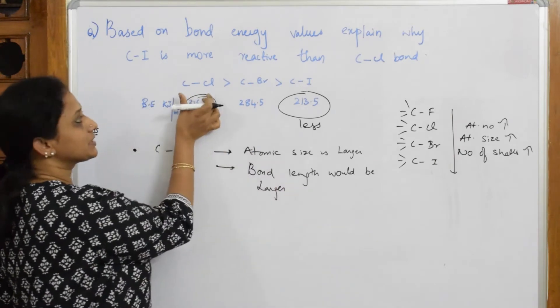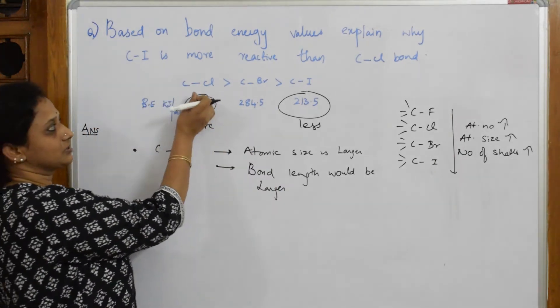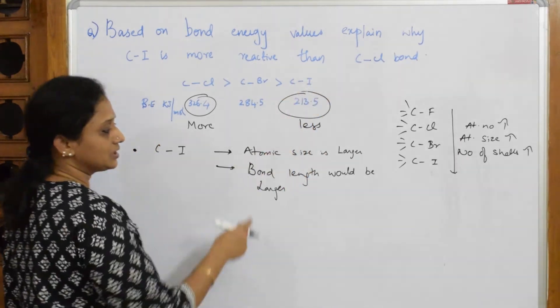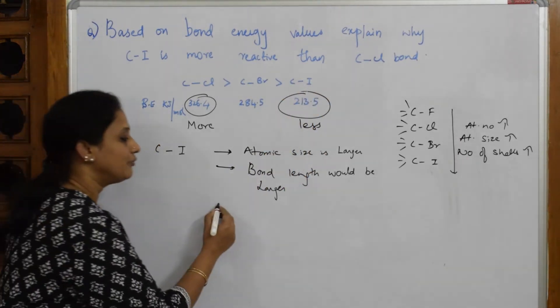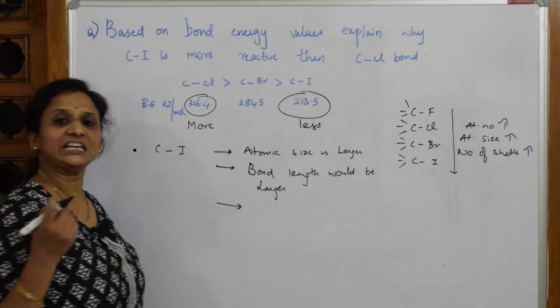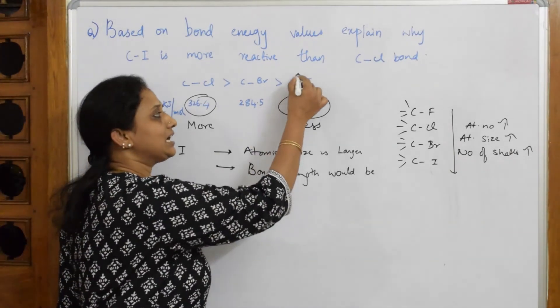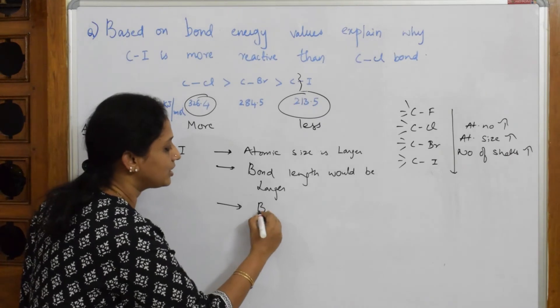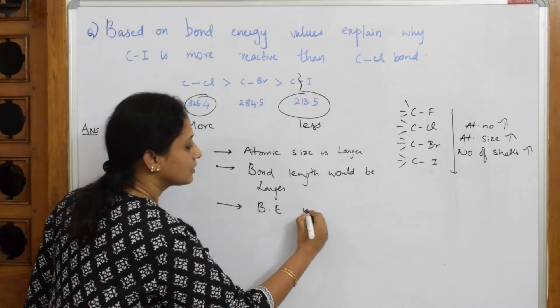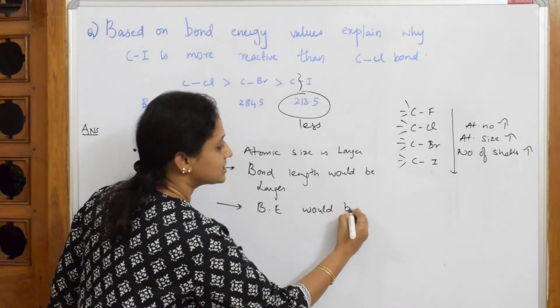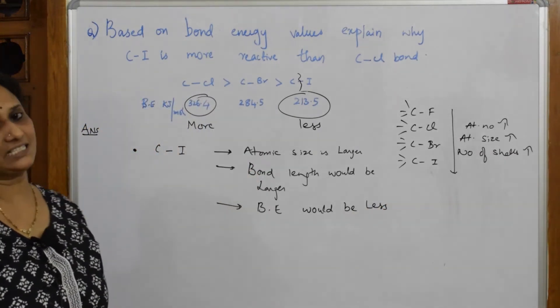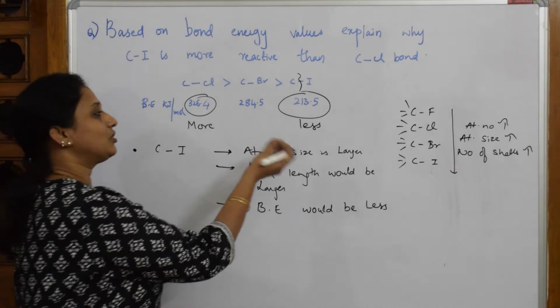Compared to this, because this is highly electronegative, this is going to attract, this is also highly electronegative, but the size of the atom is larger. So bond length would be larger. When the bond length is larger, for me it is very easy to break the bond. I can easily apply less energy to break the bond, so bond energy would be less.